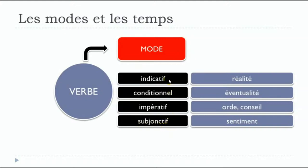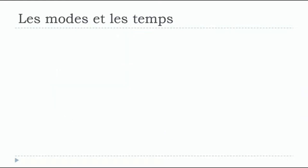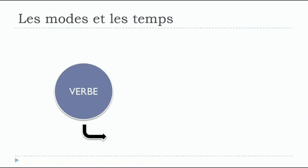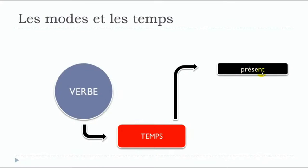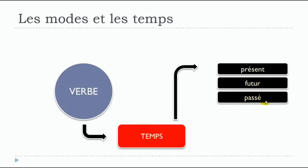In all these moods — dans toutes ces modes — you will have different tenses as well. When we're talking about les temps, the tenses, I will make it simple. You will mainly express three things: le présent, the present; le futur, the future; and le passé, the past. For all three of these, we will have different ways of expressing them, so we will have not only three tenses, but much more.